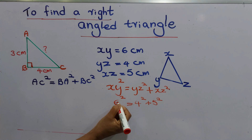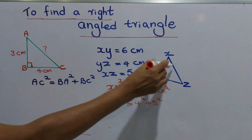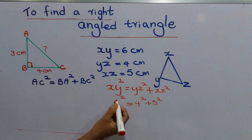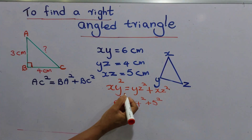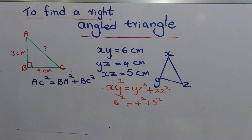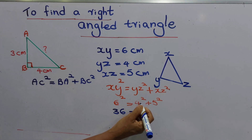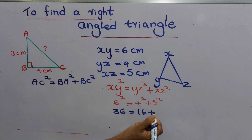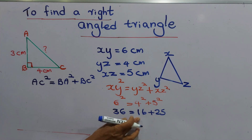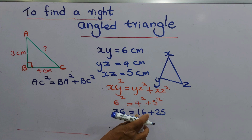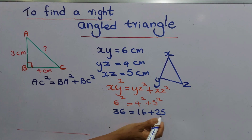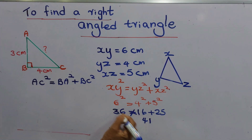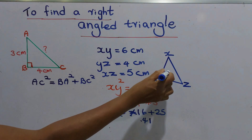Now we solve to understand whether this is a right angle triangle or not. 6 squared means 6 into 6, that is 36. 4 squared means 4 into 4, which is 16, plus 5 into 5, which is 25. So we get 16 plus 25, that is 41. Since 36 does not equal 41, this is not a right angle triangle.